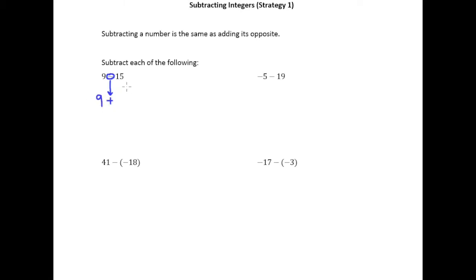And so our subtraction sign we're going to turn into an addition sign. Bring that 9 down. And then what I'm going to do is I'm going to take the number next to the subtraction sign and I'm going to change it to its opposite. So of course the opposite of 15 is negative 15.